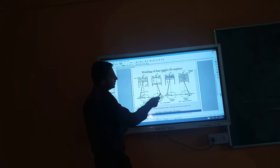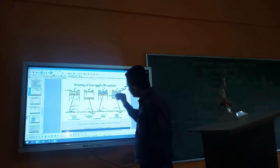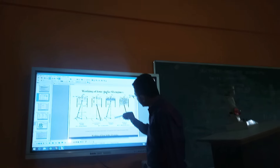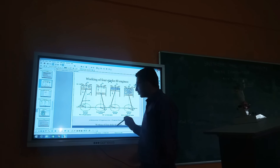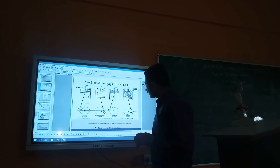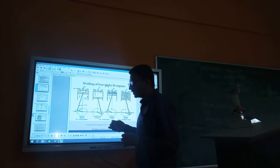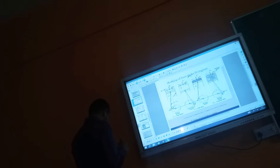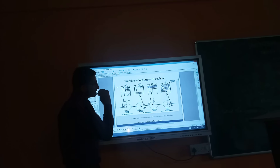In the working stroke, the piston moves from TDC to BDC. The compressed air-fuel mixture expands and forces the piston in the downward direction, generating power. The cylinder pressure acts on the piston due to the combustion occurring at TDC.